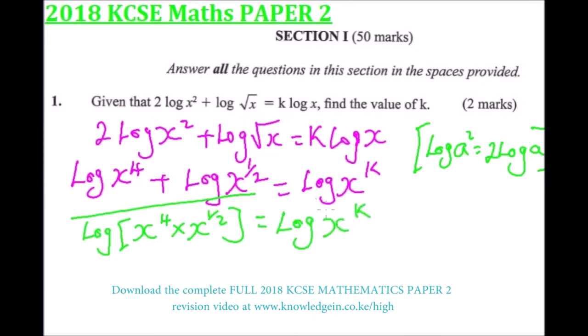From there, we now get the antilogarithm, which is the same as canceling log from both sides. We add 4 and a half because we have a common base, then we have x raised to power 4.5, which is the same as 4 and a half, equals x to power k.